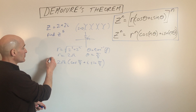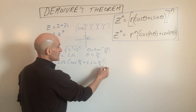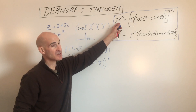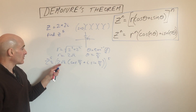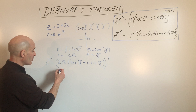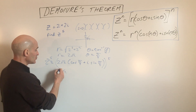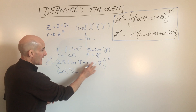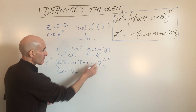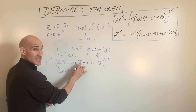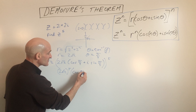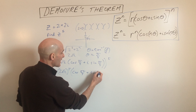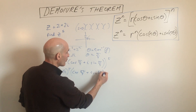Now we raise both sides to the fifth power using De Moivre's Theorem. We raise the r value to the fifth power — that's 2 root 2 to the fifth — and we multiply the angle by 5. So the angle becomes 5 pi over 4, giving us cosine of 5 pi over 4 plus i sine of 5 pi over 4.